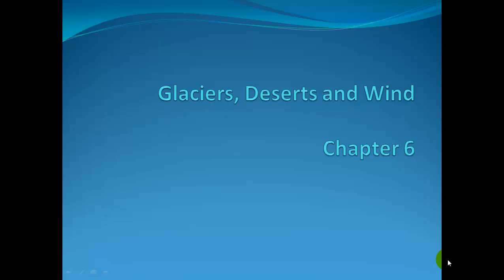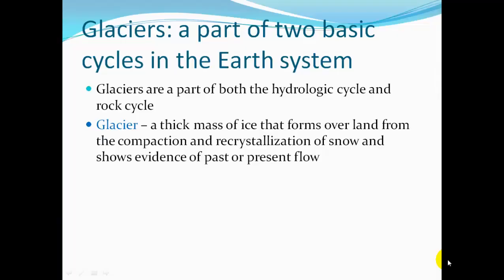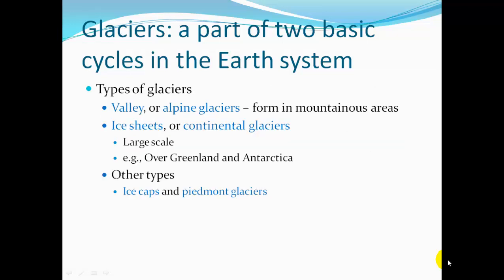Glaciers, Deserts, and Wind — Chapter 6. Glaciers are part of two basic cycles in the Earth system: the hydrologic cycle and the rock cycle. A glacier is a thick mass of ice that formed over land from the compaction and recrystallization of snow, and shows evidence of past or present flow.